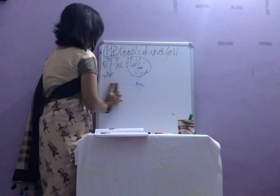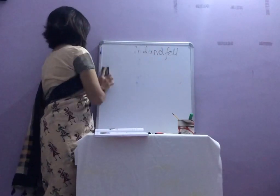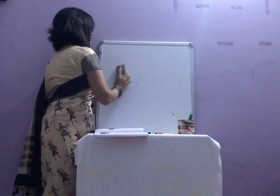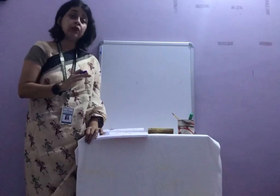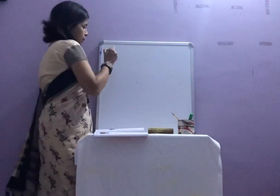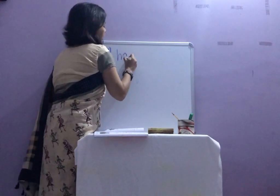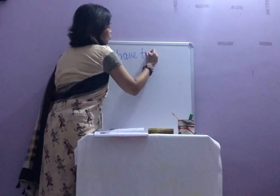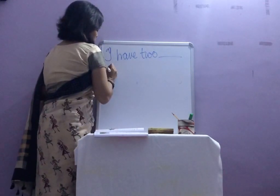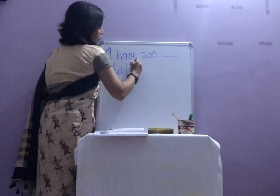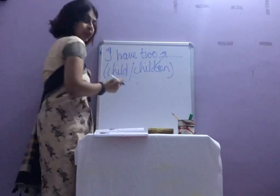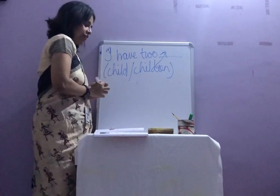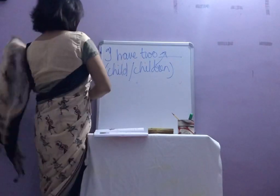Exercise C: you are going to choose the correct noun number or correct word from the bracket and fill in the blanks. For example, 'I have two dash' — in the bracket: child, children. What will you write? Children. I have two children. Honestly, I have two children — a son and a daughter.